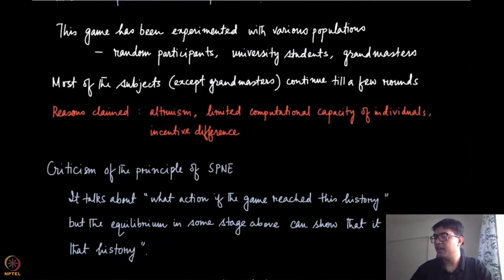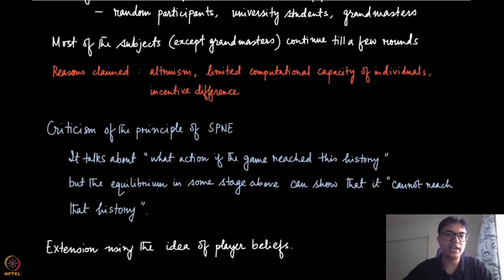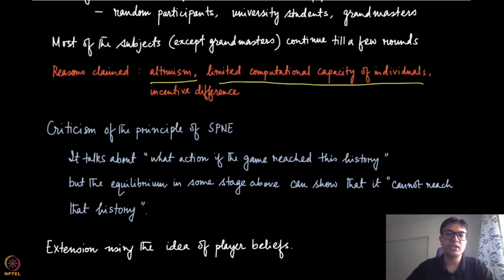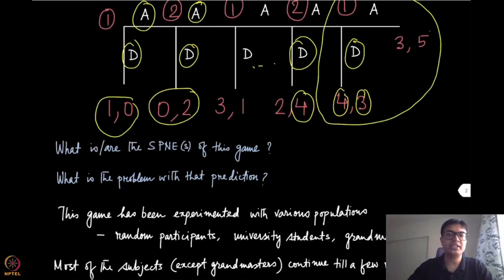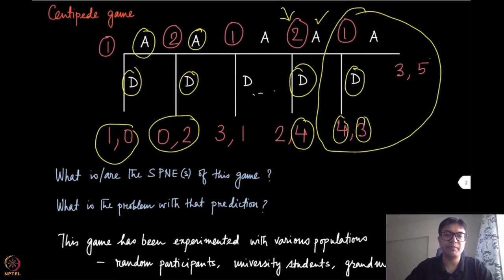So there had been various reasons that has been claimed for this. Maybe players are altruistic, they also care about the utilities of the other players, or they have limited computational capability so that they cannot compute the subgame perfect Nash equilibrium and therefore do not pick that action. Or there are certain kind of developments or variations of this game. So it has also been, the same game has also been experimented with a larger difference in the payoffs. So for instance, if all these numbers, all the utility numbers, were multiplied by 10 or maybe 100.